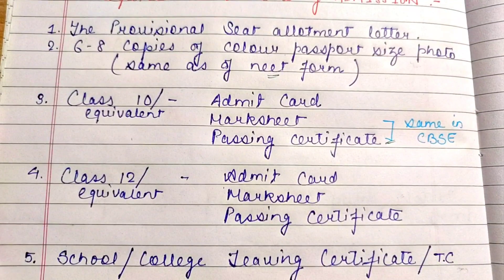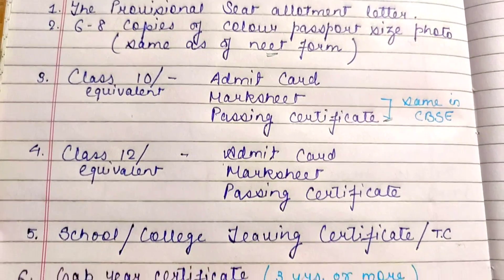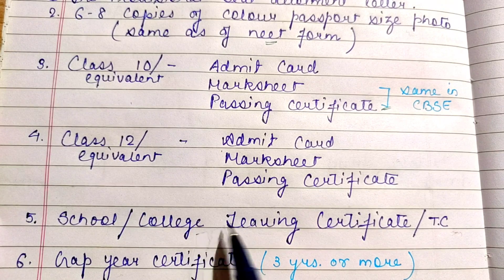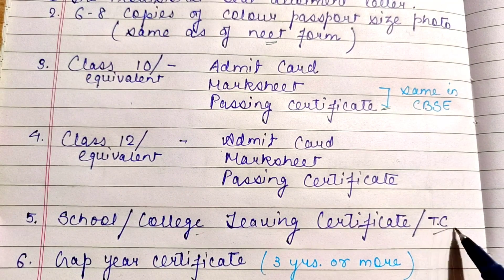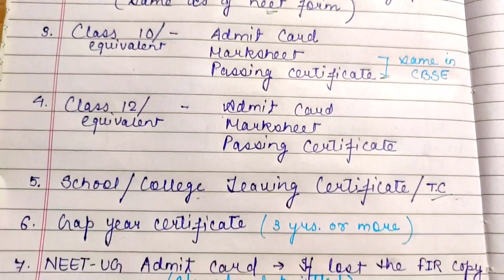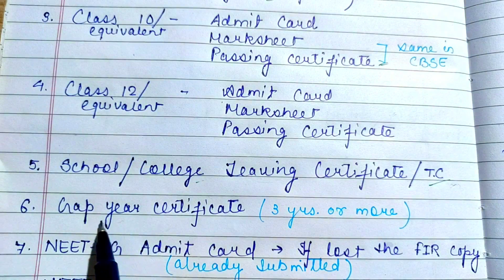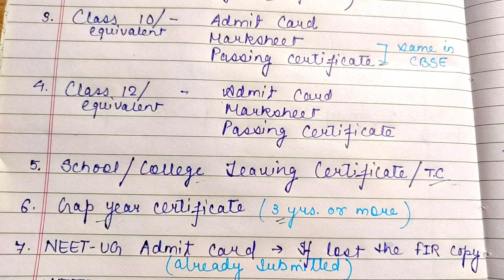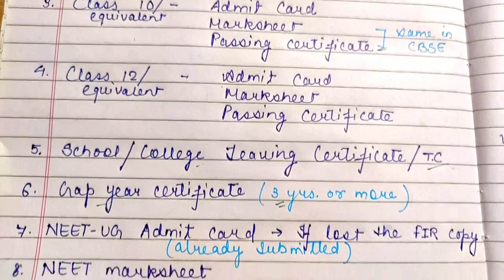For class 12th, you need the admit card, mark sheet, and passing certificate. You also need a school leaving certificate if you studied at a school, or a college leaving certificate — also called a transfer certificate — if you were at a college or doing another course. Gap Year Certificate is required only if you have a gap of 3 years or more.